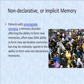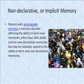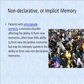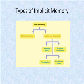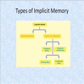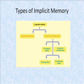Patients with anterograde amnesia, a memory disorder affecting the ability to form new memories, often have little ability to form new declarative memories, but may be relatively spared in the ability to form new non-declarative memories. Among implicit memory, there are two major types that can be distinguished: procedural memory involving skills, and emotional conditioning.